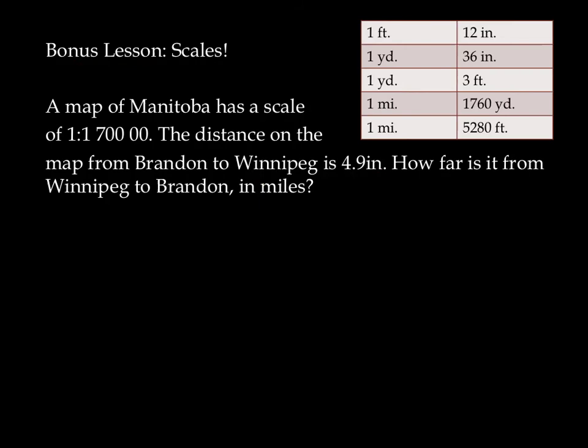A little bonus lesson on the side here is to deal with something called scales. So when you look at maps, they always give you a scale. For example, a map of Manitoba has a scale of, and there's an error here, 1 to 1,700,000. So there should be an extra zero that I've added in there. Now, let's read. The distance on the map from Brandon to Winnipeg is 4.9 inches. How far is it from Winnipeg to Brandon in miles?